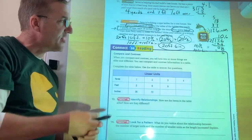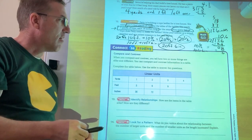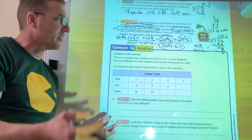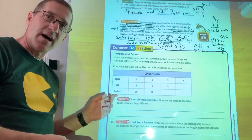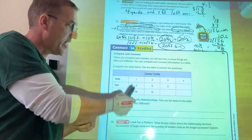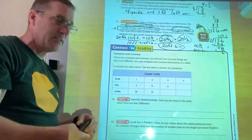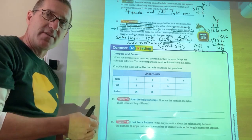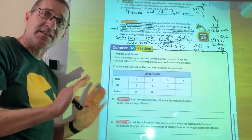Alright. So compare and contrast. When you compare and contrast, you tell how two things are alike and different. And you can compare and contrast information in a table. This looks a lot like last chapter, right? It's a function box, right? If I put one yard in, I get three feet out and I get 36 inches out. And so I've got a relationship here. This is going to be a pattern that is never going to change, right?